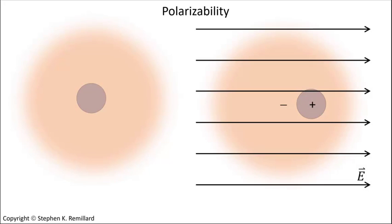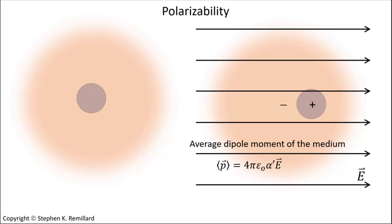An electric field causes a positive nucleus and the negative electrons to shift in opposite directions, making a dipole moment that's proportional to the applied field. Alpha prime is the volume polarizability, so called because it has dimensions of volume, and it indicates how easily the atom or molecule becomes polarized.